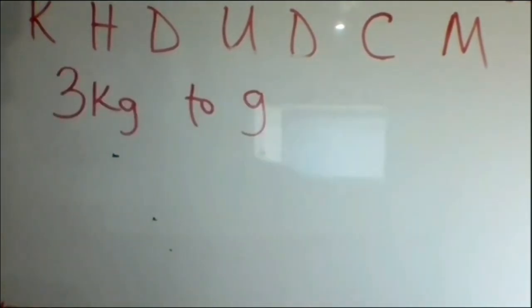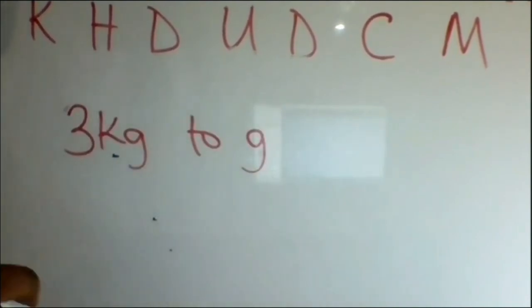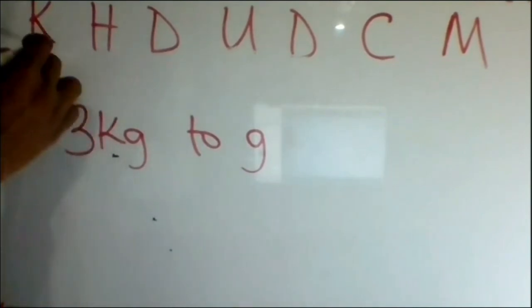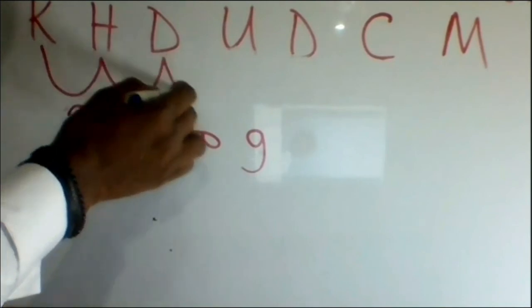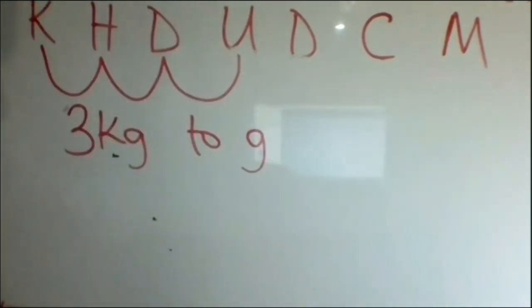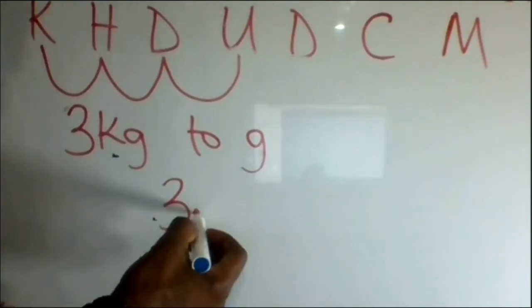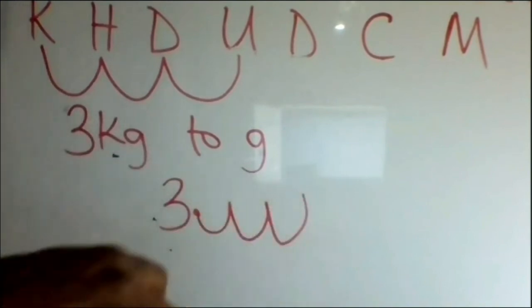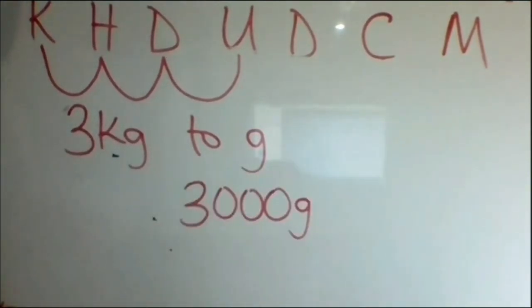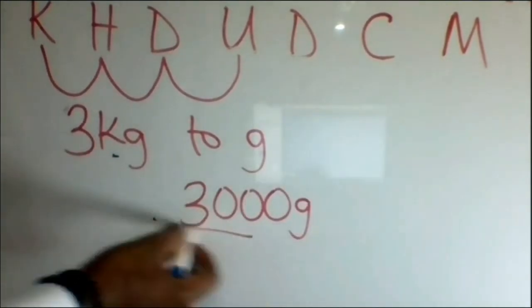What if we are converting 3 kilograms to grams? We will move our point from kilo to unit, so our point moves 1, 2, 3 in the right direction. Therefore, in 3 kilograms, the point will move 1, 2, 3 times. This gives us 3,000 grams.